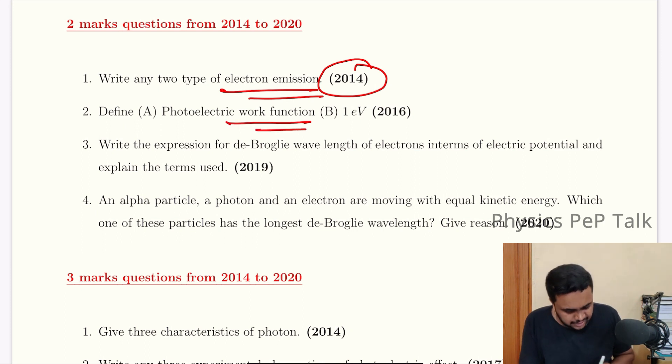Next, define work function. Work function is the minimum amount of energy required to remove an electron from the surface of a metal. It is called the work function.